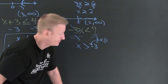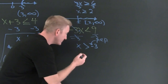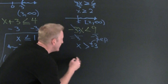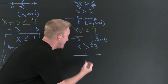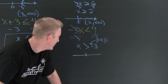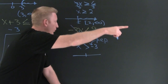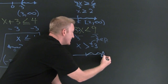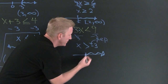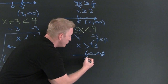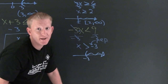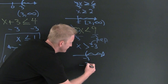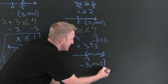Watch out for that. The arrow is pointing that way — and as long as x is on the left, you shade in that direction. Open or closed? Open. In interval notation: open parenthesis negative three to infinity.